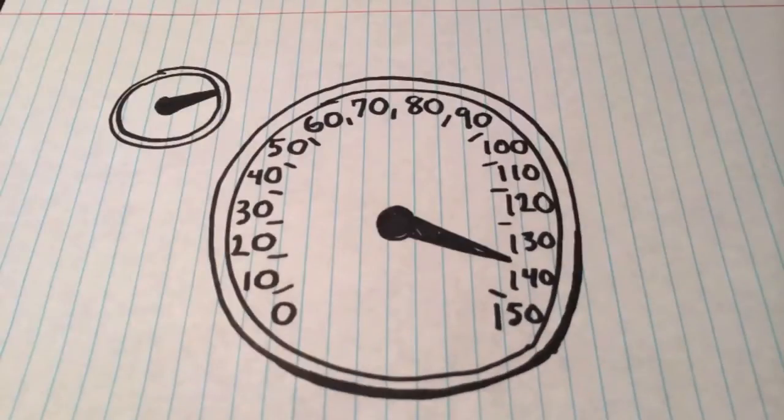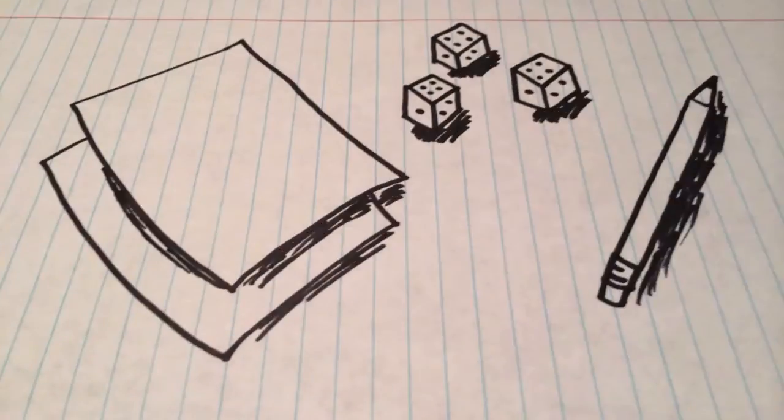First, you need pencil, paper, dice, and a timer. Write the numbers 1 through 36 on a piece of paper. Then use your dice to roll three numbers.